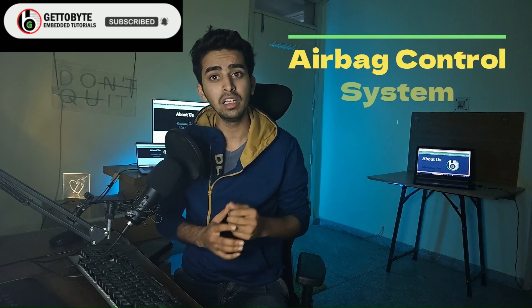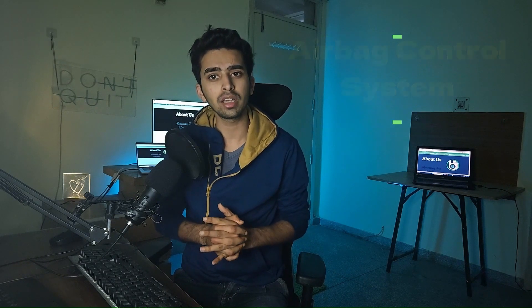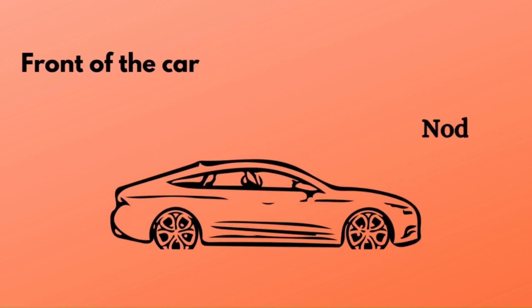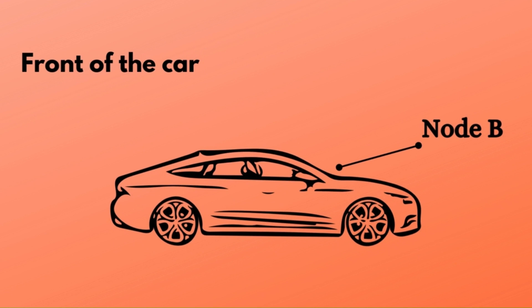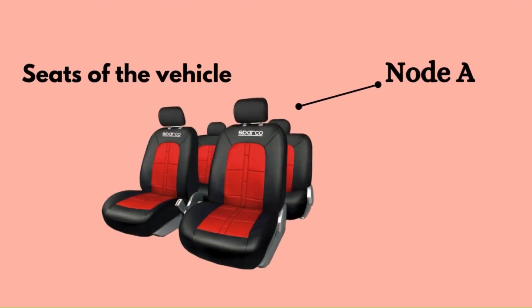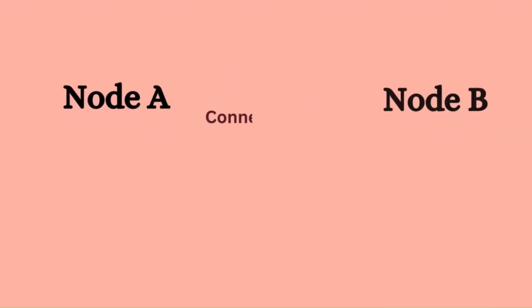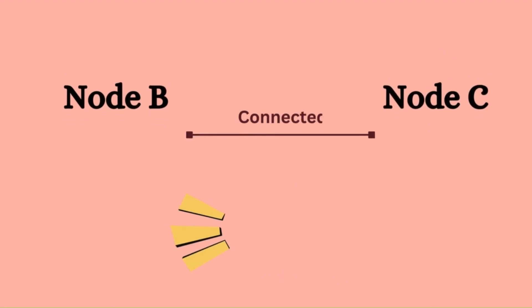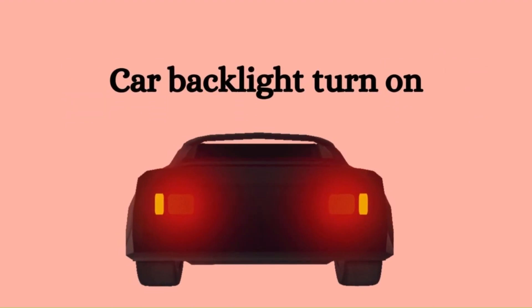To visualize it: consider a car with an airbag control system controlled by the vehicle motion monitoring system. If the vehicle motion monitoring experiences a certain brake or impact, the airbag control system will be turned on. Let's say the airbag control system is at node A, vehicle motion monitoring is at node B — at the front of the car — and node A is distributed on every seat. Node B and node A are connected directly. Now, there is also node C, the car backlight, and node C and node B are connected such that if the vehicle motion experiences a sudden brake, the backlight turns on immediately.